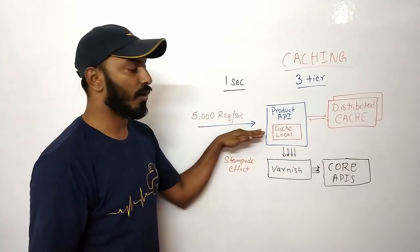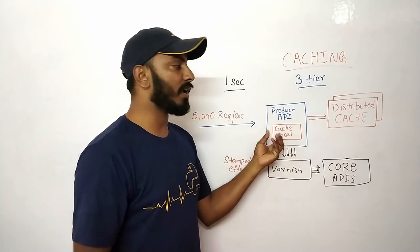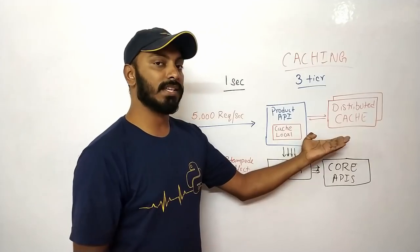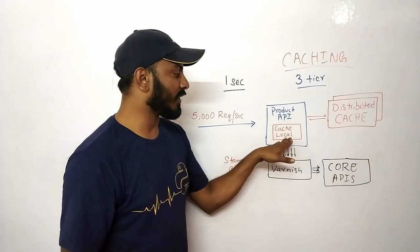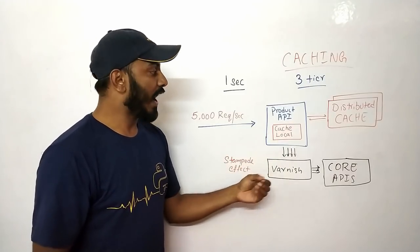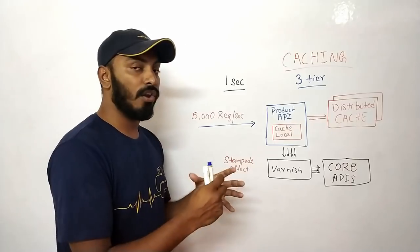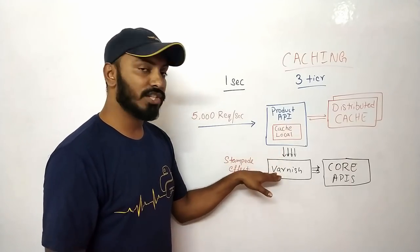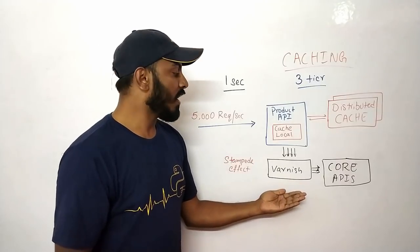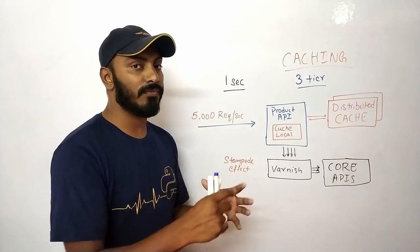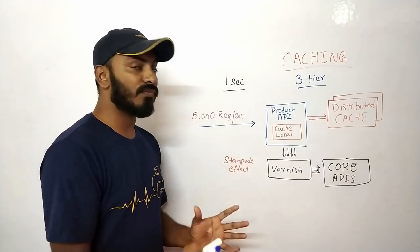If data is not found in local or distributed cache, the request goes to Varnish — the third caching tier sitting between Product API and Core API. Varnish is often used to cache pages and API responses. One of its best features is request collapsing, which solves the stampede effect. To understand request collapsing, you first need to understand the stampede effect.